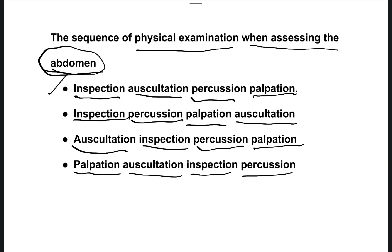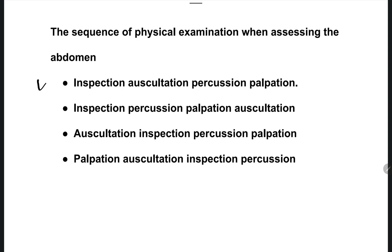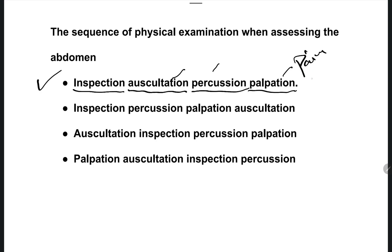When assessing a patient with abdominal pain, the right answer is option A. First you inspect to find external abnormalities, then auscultate with a stethoscope to listen to intestinal movements, then percussion for any mass presence, and finally palpation to detect pain, mass, or tumour.